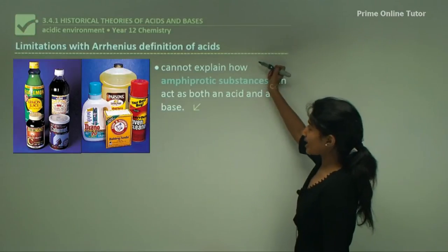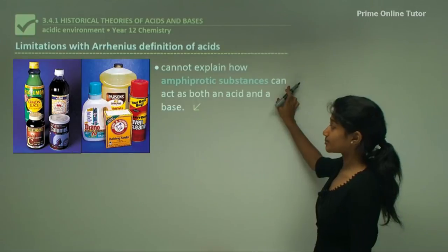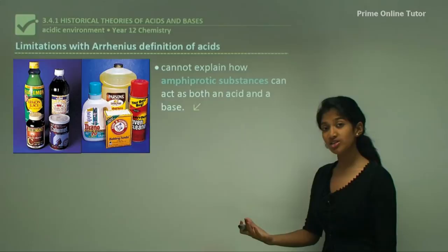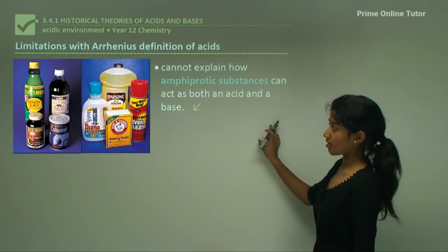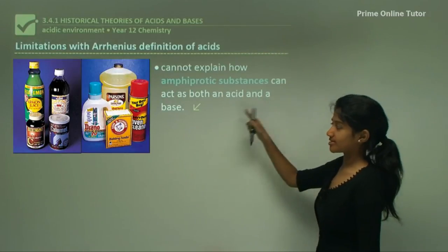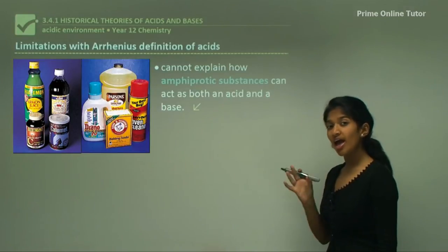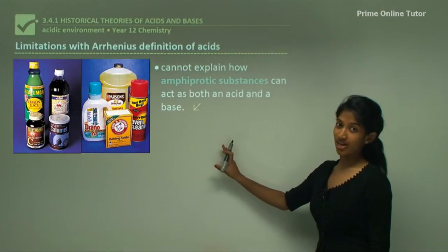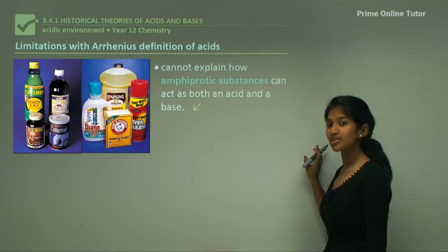Arrhenius was also unable to explain how amphiprotic substances can act both as acids and bases. These substances can donate or accept protons. His theory did not explain this because he had a very defined rule: acids produce hydrogen ions and bases produce hydroxide ions.